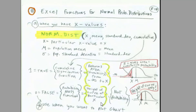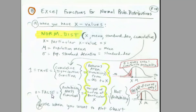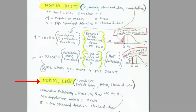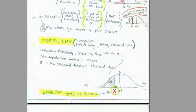NORM.INV does the opposite — we give it a cumulative probability, the mean, and the standard deviation, and it tells us the x. We can give it some probability like 10% on the low end and it will tell us what the x is. We can also do 1 minus 10%, and it will tell us the value that's the hurdle to get to the top 10%. The inverse functions get us our x value.